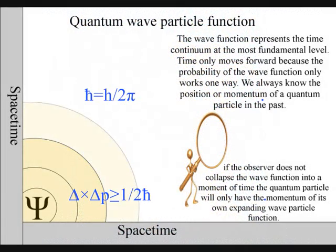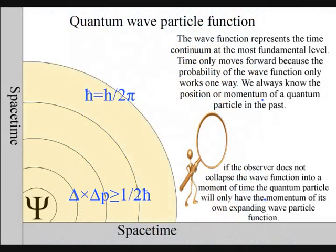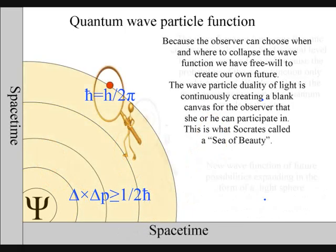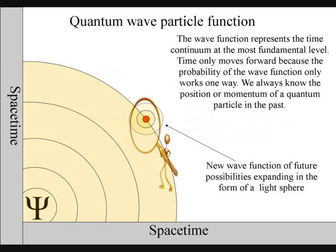The atoms of the observer bond together and then collapse the wave function in unison, forming their own unique future, position or reference frame in space and time. It is because the observer can choose when and where to collapse the wave function that we have free will.